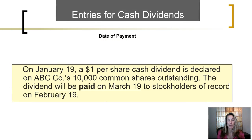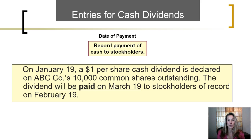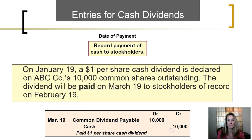Finally, on the date of payment, the liability that was recorded on the date of declaration is actually paid. We only need to record payment of cash, decreasing the liability to these stockholders. We are going to debit the liability to decrease it and credit cash, because we used cash to pay the dividend.